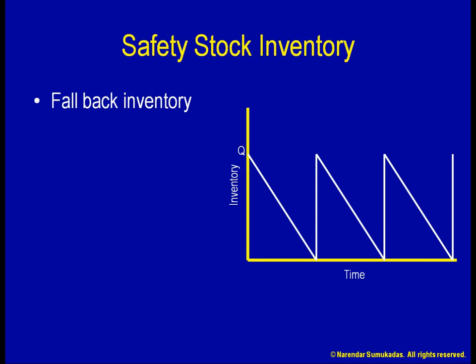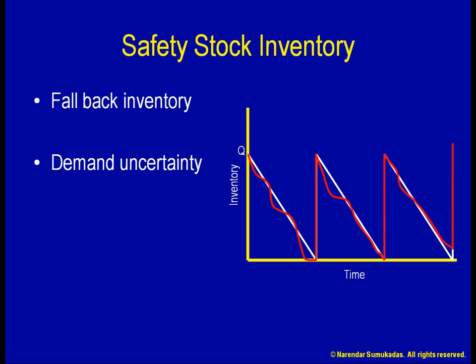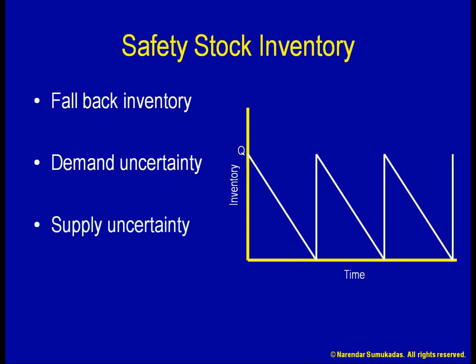What if the demand or consumption rate is not constant? We cannot predict exactly when we will hit zero. What if we do predict accurately, but our supplier messes up? The greater the uncertainty in our demand pattern, or in our supply pattern, or both, the greater the level of safety stock we will need to hold.